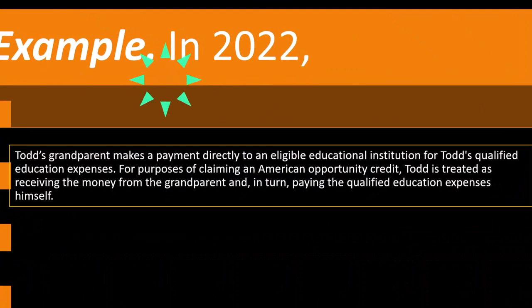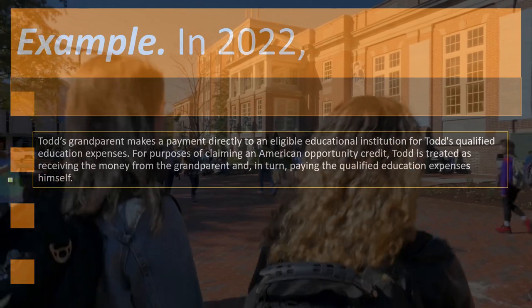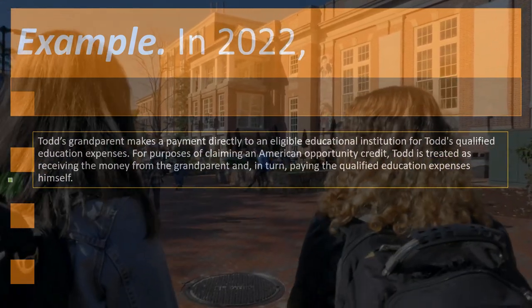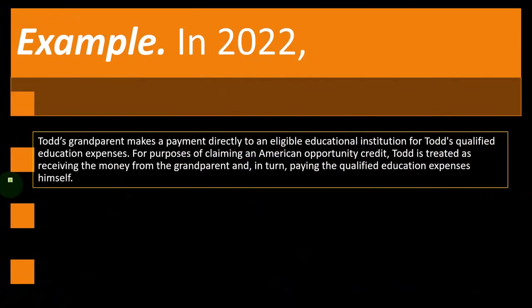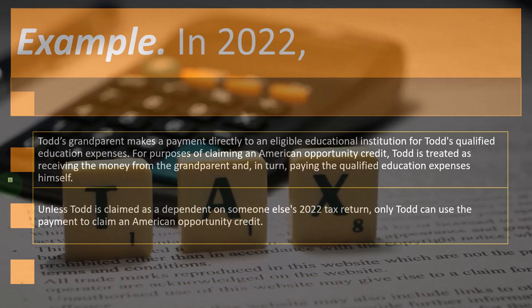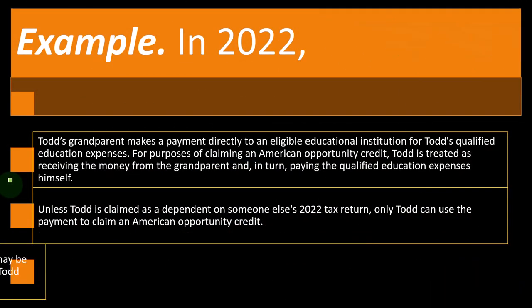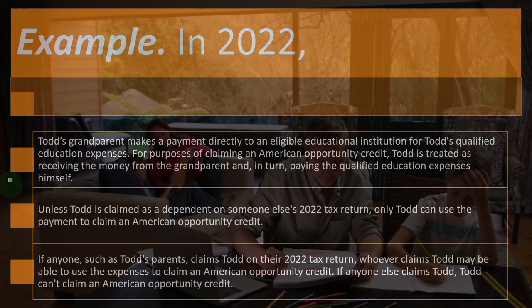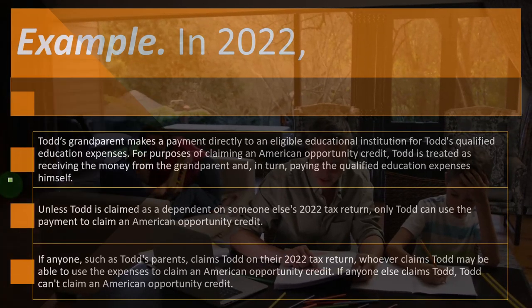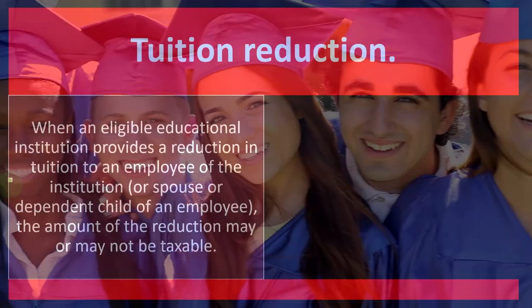Example from 2022: Todd's grandparent makes a payment directly to an eligible educational institution for Todd's qualified education expenses. Todd is treated as receiving the money from the grandparent and in turn paying the qualified education expenses himself. Unless Todd is claimed as a dependent on someone else's 2022 return, only Todd can use the payment to claim an American Opportunity Credit — not the grandparents, since they aren't claiming him as a dependent. If anyone such as Todd's parents claims Todd, they may be able to use the expenses to claim the credit.